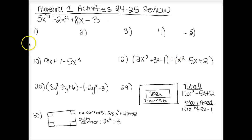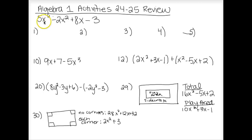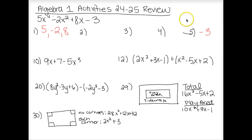Make sure you know the definition of polynomial and that you can identify what is and what is not a polynomial. They gave you a polynomial — I know it's a polynomial because all the exponents are whole numbers — and asked various questions about it. First, it asked you to name the coefficients. A coefficient is the number multiplied times a variable term, the numeric factor. The coefficients here are 5, negative 2, and 8. Negative 3 is not a coefficient because it has no variable; it's called a constant.